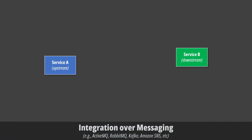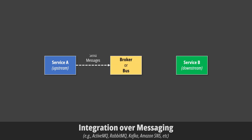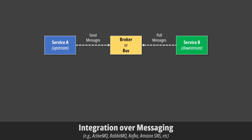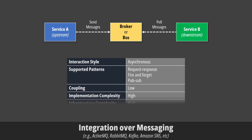When we leverage messages for integration, Service A, known as the upstream, sends a message to a broker or bus. You can think of the broker as a sort of post office or post box. Service B, the downstream, retrieves the message from the broker at its own convenience. As you can see, this process is asynchronous — it means that Service A and Service B don't need to be online at the same time to collaborate. There is low coupling between the two services.